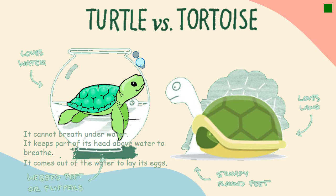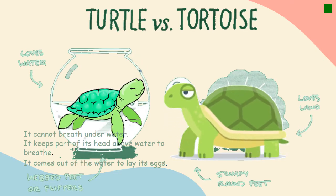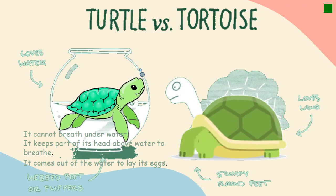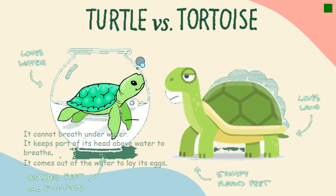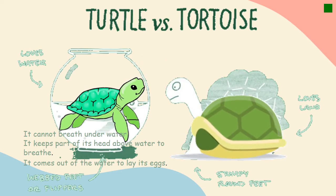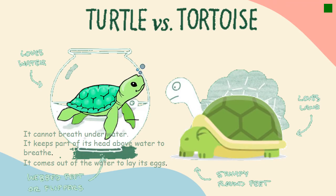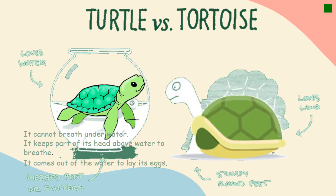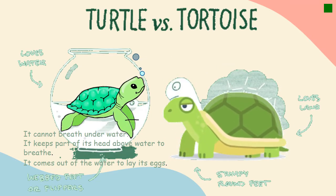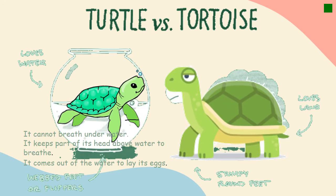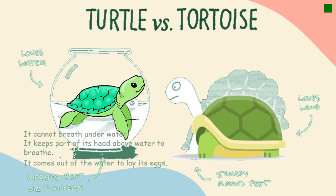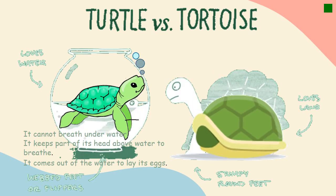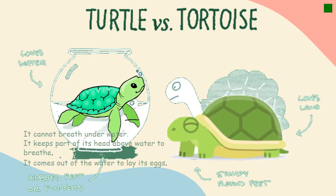Here we can see a turtle and a tortoise. A turtle loves water and has webbed feet or flippers. You have to know that it cannot breathe under water — it keeps part of its head above water to breathe. It comes out of the water to lay its eggs, and it also uses lungs to breathe.